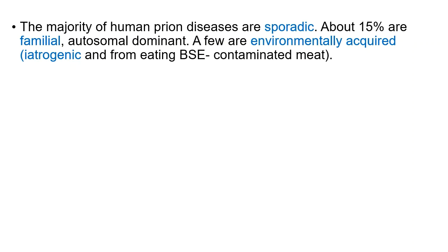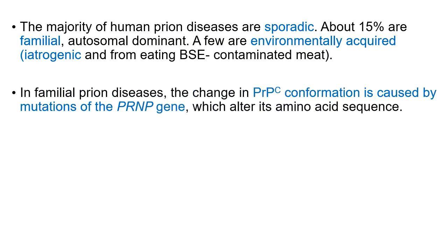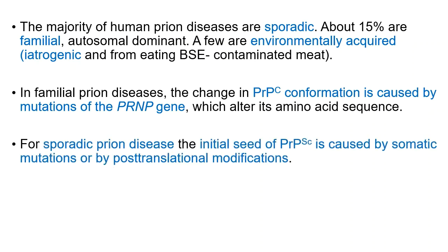The majority of human prion diseases are sporadic. About 15% are familial and autosomal dominant. A few are environmentally acquired or iatrogenic, resulting from eating BSE-contaminated meat. In familial prion diseases, the major change is the formation of PRPSC from PRPC, resulting from mutation in the PRNP gene on chromosome 20. For sporadic prion diseases, the initial seed of PRPSC is caused by somatic mutations or post-translational modifications.